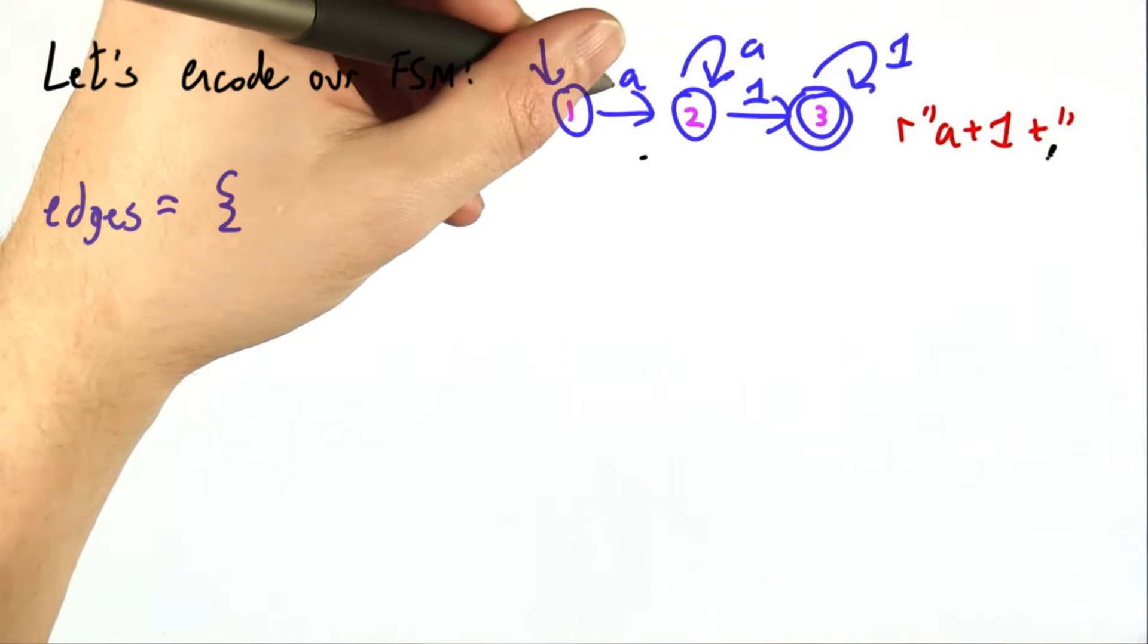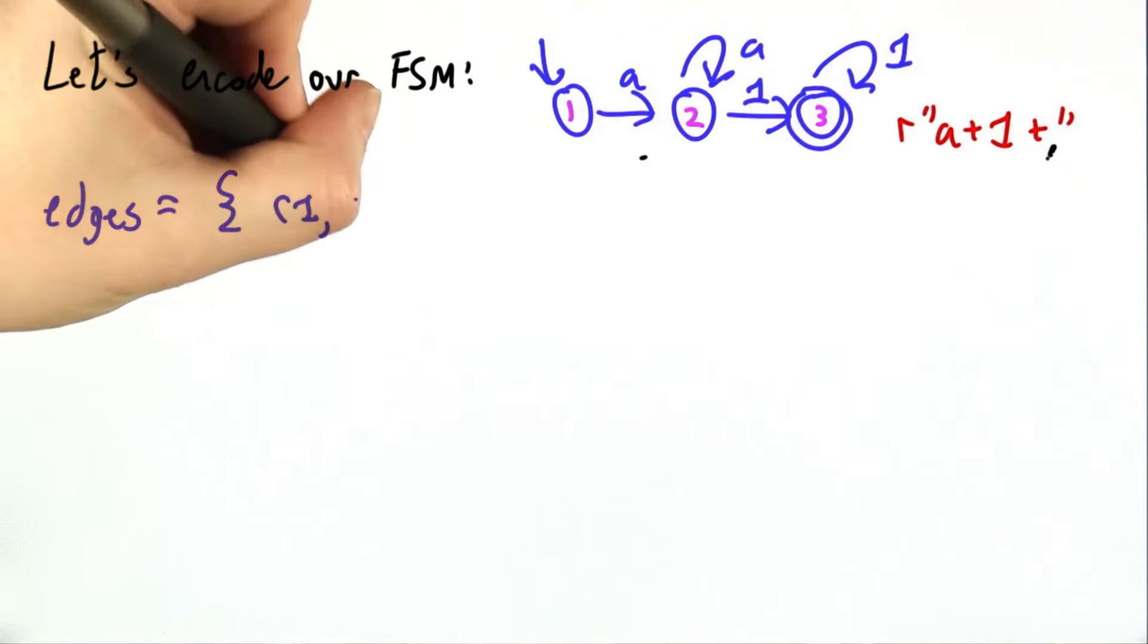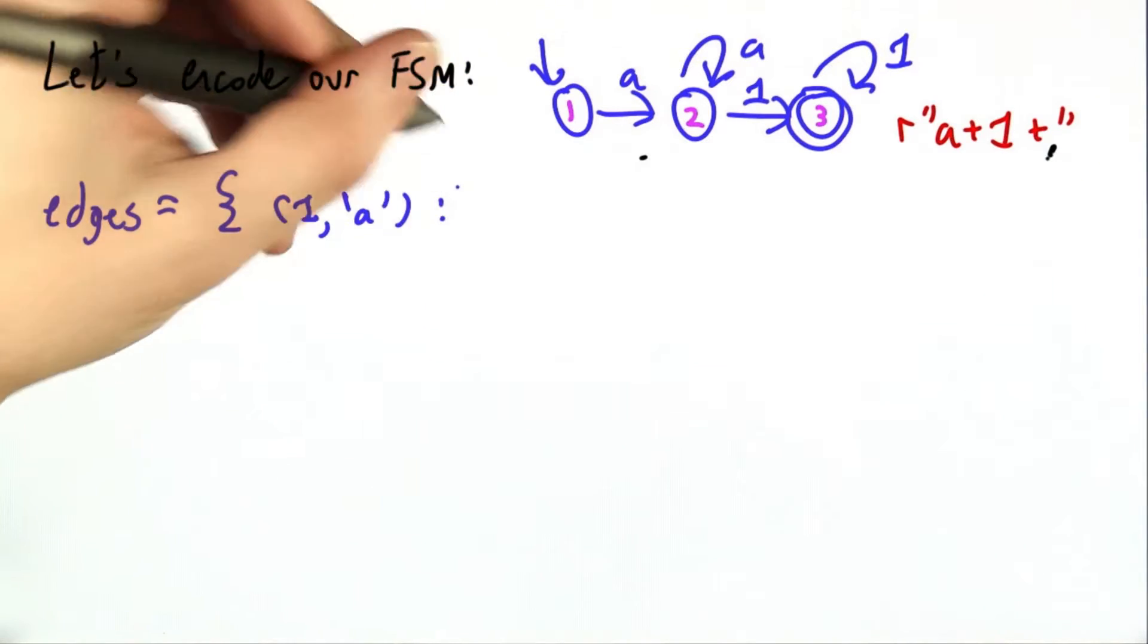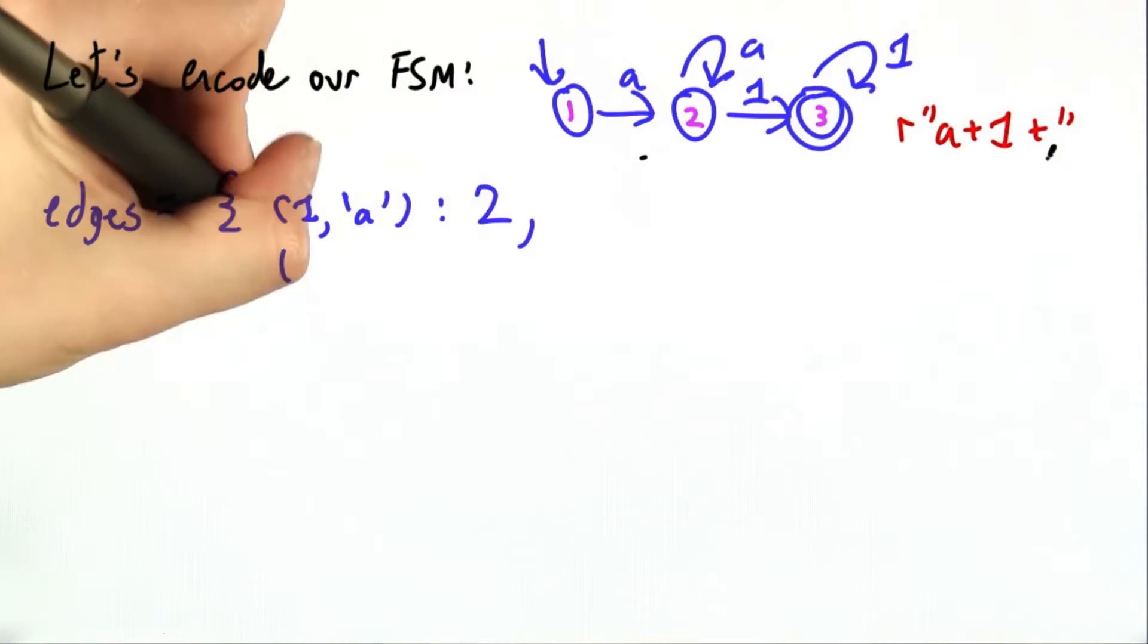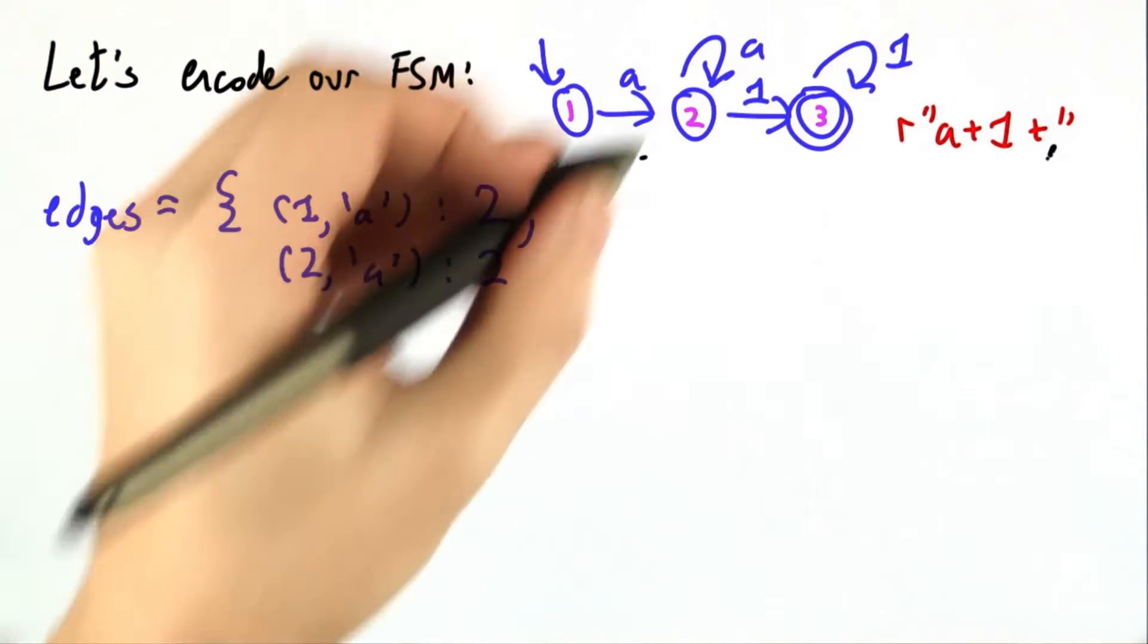One of our edges is that state 1 on A, state 1 on input A, goes to state 2. And another one is that state 2 on A stays in state 2. That's our self loop.